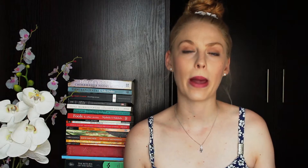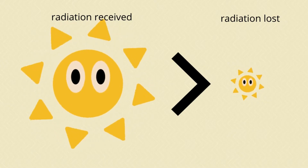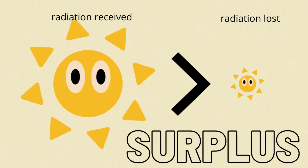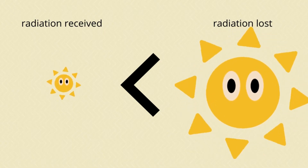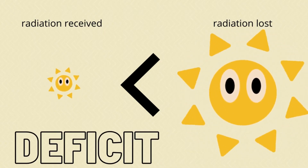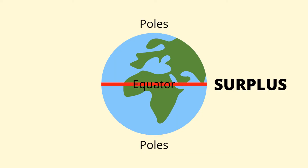In an area where more radiation is received than lost, we call that an area of surplus. Whereas in an area where there is more radiation lost than received, we call that an area of deficit. The atmosphere is heated unequally — our equatorial areas have low latitudes and these are areas of surplus, meaning that more radiation is received than lost.